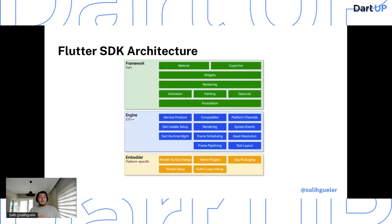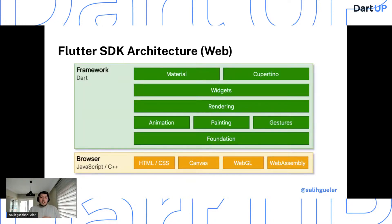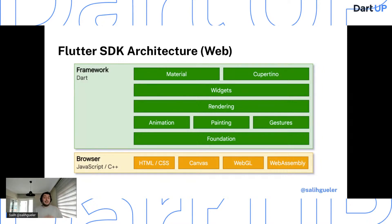One thing about web: at the embedder level Flutter doesn't behave the same as it does for mobile and desktop. The reason is Flutter's rendering engine is written in C++ and designed to interface with the underlying operating system. On the web we don't care about the underlying OS as much, so a different approach was needed — a re-implementation of the engine on top of standard browser APIs.